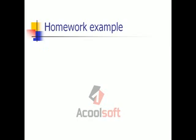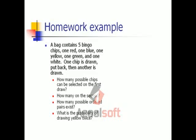A bag contains five bingo chips: one red, one blue, one yellow, one green, and one white. One chip is drawn, it's put back, then another is drawn. Make sure you read that carefully — the words 'put back' are a big difference maker here. How many possible chips can be selected on the first draw? How many can be done on the second? How many possible ordered pairs exist? And what is the probability of drawing yellow twice? Pause the video and give yourself a chance to answer those questions.